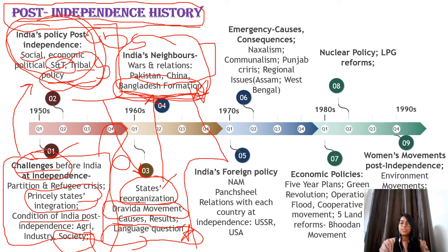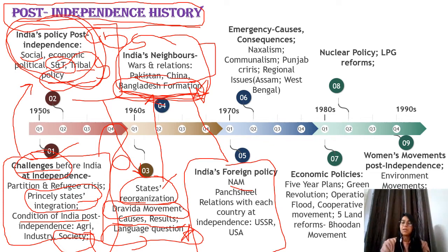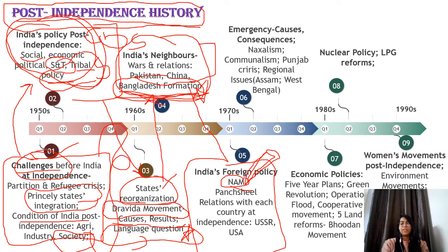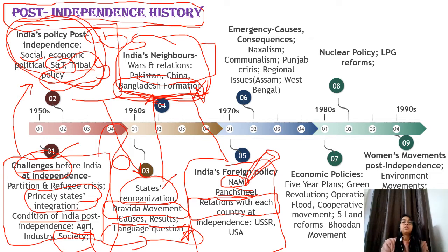Next, you will move to India's foreign policy. The Non-Aligned Movement is a very important topic — how did it originate, what was its contribution, and is it relevant in the current context. India's Foreign Minister S. Jaishankar has also commented on NAM, saying India wants strategic autonomy — these keywords are very important and you should read current topics as well. The heading of India's foreign policy is Panchsheel — you have to read how it evolved, its principles, and its relevance in the current context. You will also cover how India's relations with prominent countries like the USA, USSR, and France were at independence and in subsequent years.